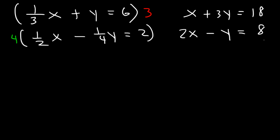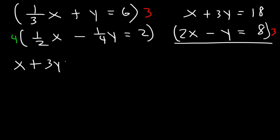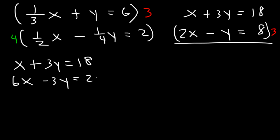Any time x and y are aligned, it's easier to use the elimination method. So to do that, we need to multiply the second equation by 3 so that the y variables will cancel. I'm going to rewrite the first equation: x plus 3y equals 18. In the second one, 2x times 3 is 6x, 3 times negative y is negative 3y, and 8 times 3 is 24.